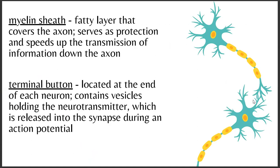Two neurons together show how dendrites communicate through terminal buttons, located at the end of each neuron. These contain vesicles holding neurotransmitters, which are released into the synapse during an action potential. I'll explain what action potentials, neurotransmitters, vesicles, and synapses are shortly.